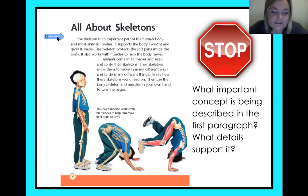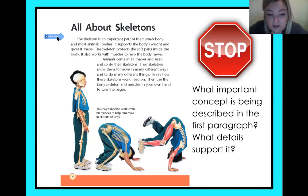All about skeletons. The skeleton is an important part of the human body and most animals' bodies. It supports the body's weight and gives it shape. The skeleton protects the soft parts inside the body. It also works with muscles to help the body move. Animals come in all shapes and sizes, and so do their skeletons.